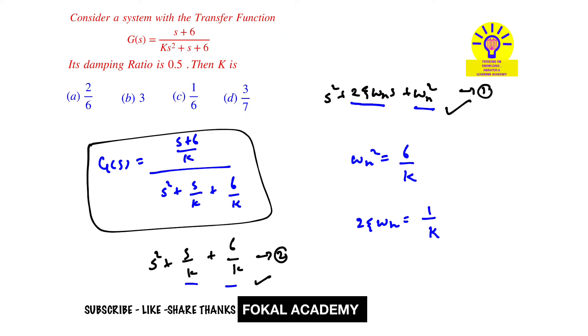But from the problem, damping ratio is given as 0.5. Now substitute zeta value 0.5 and omega_n value here. So from omega_n^2 we will get omega_n = sqrt(6/k). Now substitute omega_n value and zeta value in this equation.